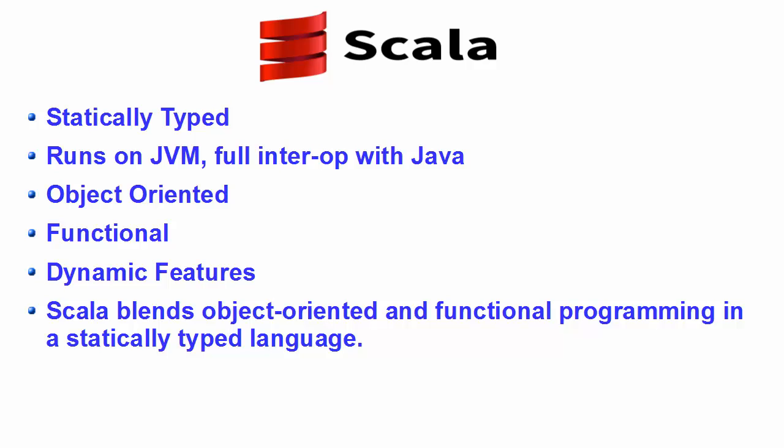The downside is you need to be familiar with more kinds of error messages. Scala runs on the JVM — the Java Virtual Machine — and it's fully interoperable with Java. That means you can use any Java code in Scala and Scala code in Java. Scala has the functionalities of an object-oriented language as well as a functional language, and also has dynamic features, blending object-oriented and functional programming in a statically typed language.